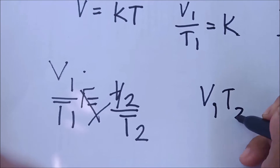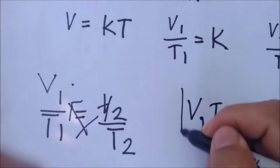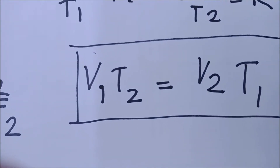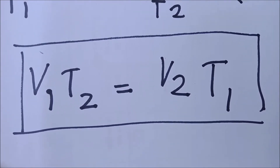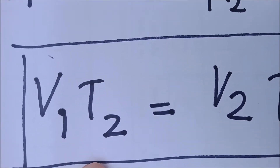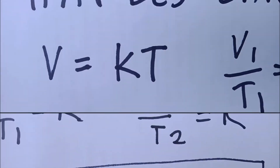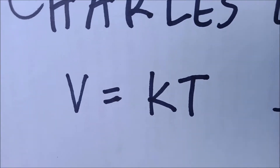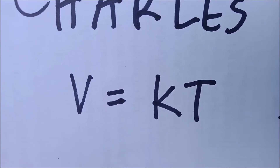Cross-multiplying this formula, we get our working formula for Charles' Law: V1 T2 equals V2 T1. It's called the working formula because from it we can derive four other formulas — one for V1, one for T2, one for V2, and one for T1. Analyzing Charles' Law: from V equals constant times temperature, volume and temperature are directly proportional to each other.